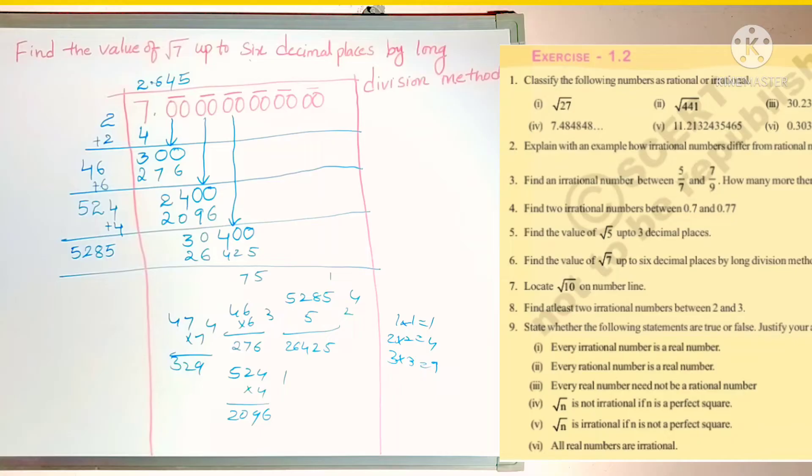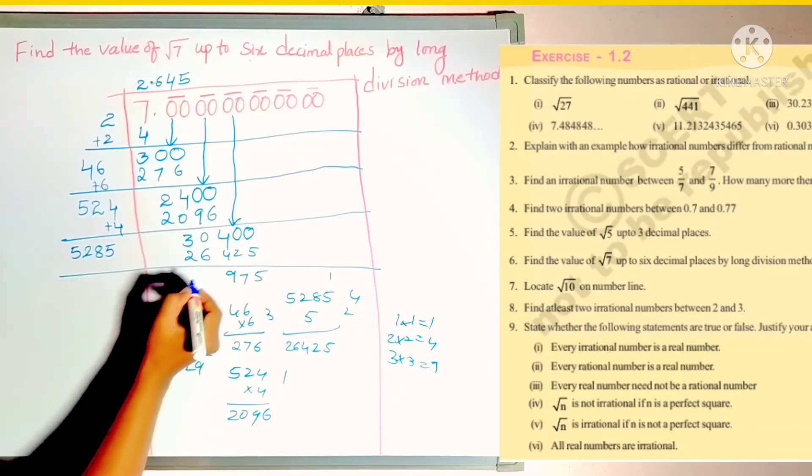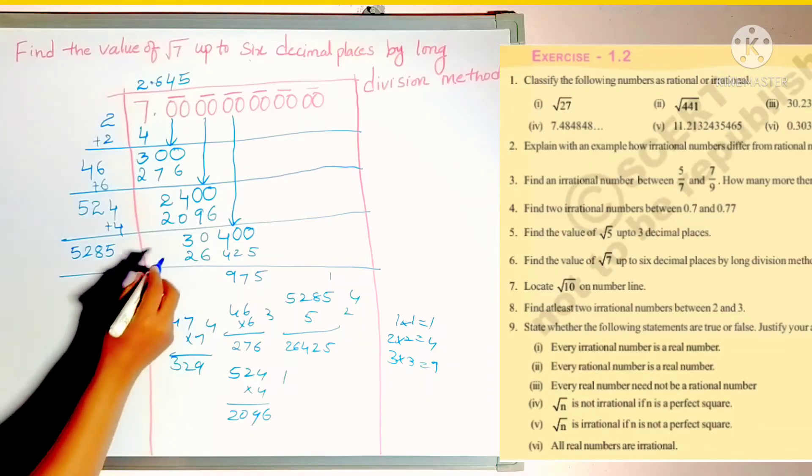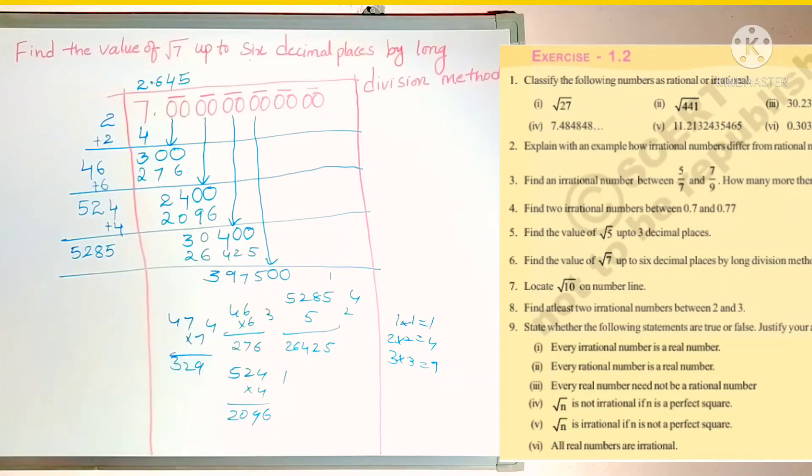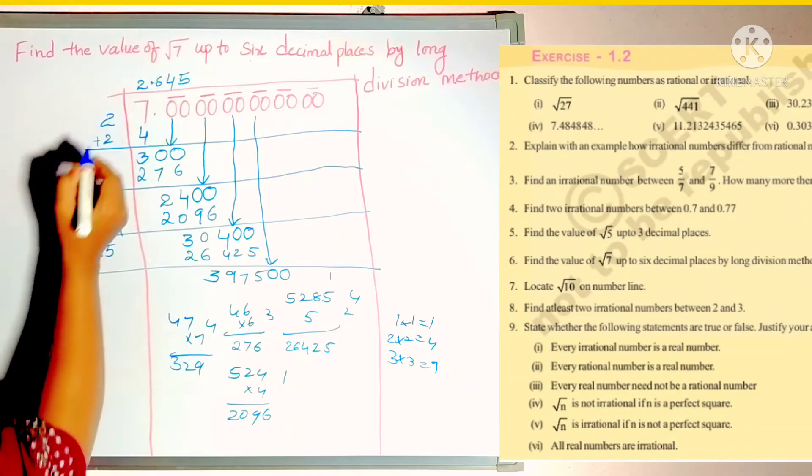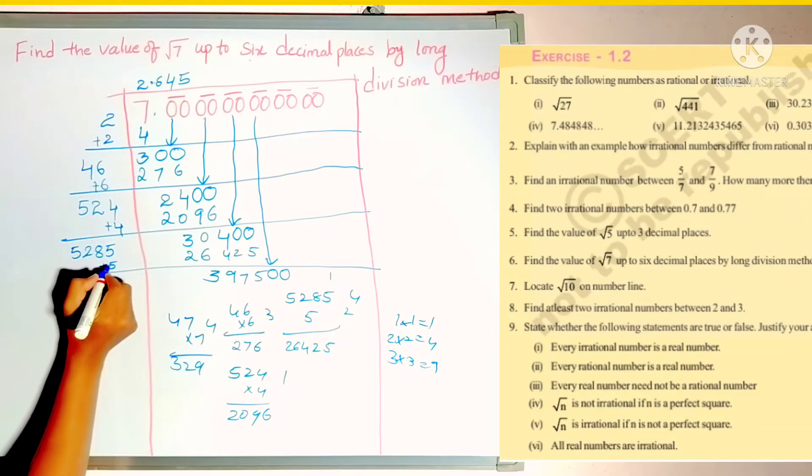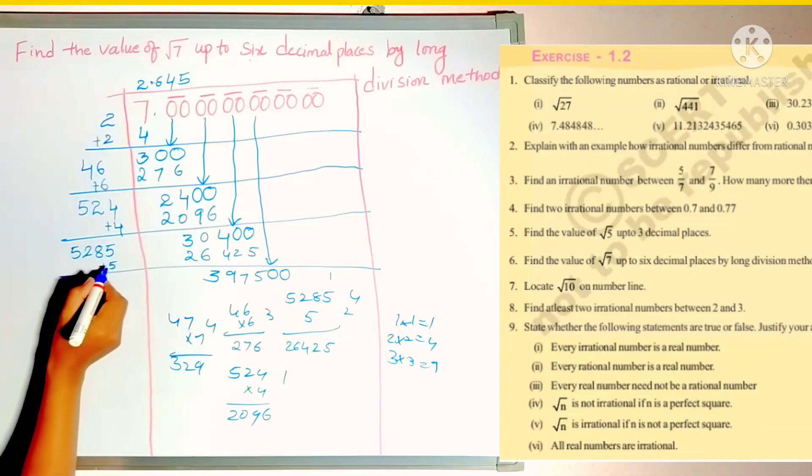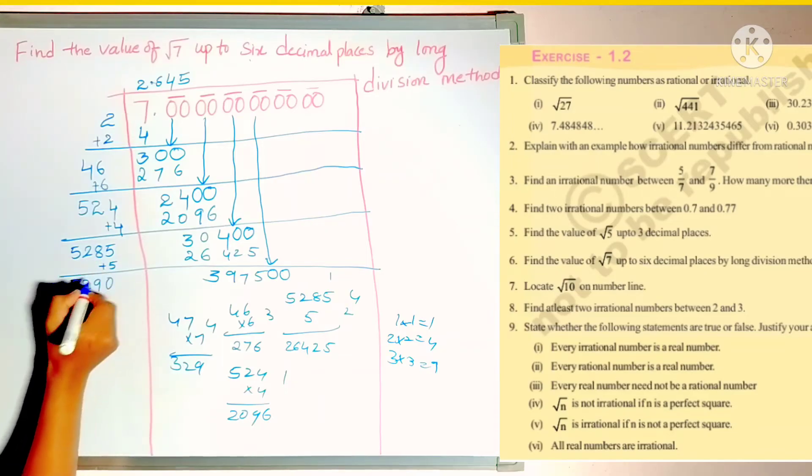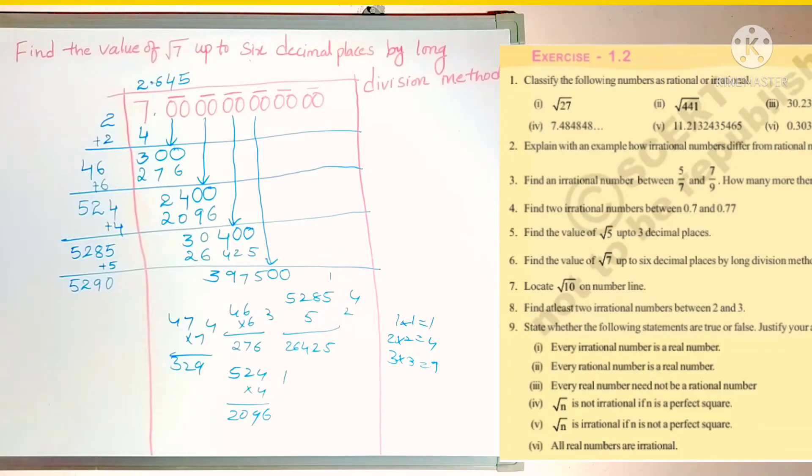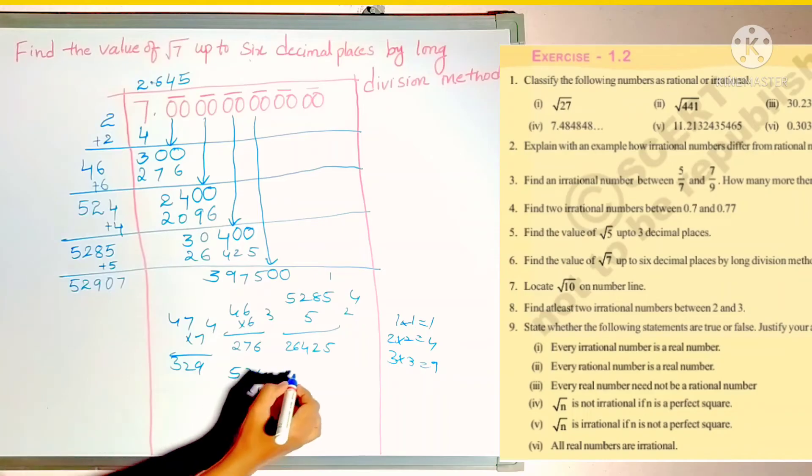Again we have to subtract. 13 minus 4 is 9, and 9 minus 6 is 3. Next set of zeros bring down. Now here in the quotient 5 is there. Just add that 5. Now it is 5 plus 5 is 10. So here 8 will become 9. So 290. Now you see here 39 is there. 5 times 7 is 35. 5 times 8 is 40, it is more than 39. So we can write 7. If we check.